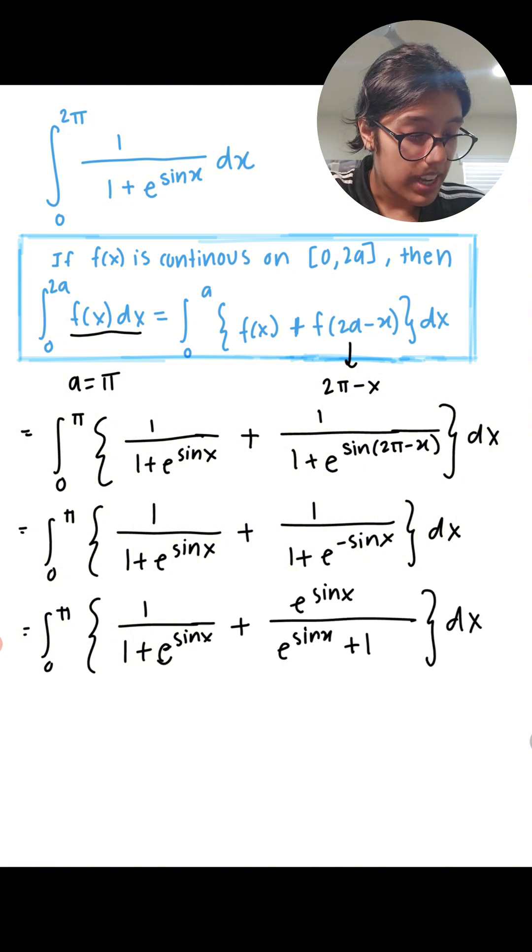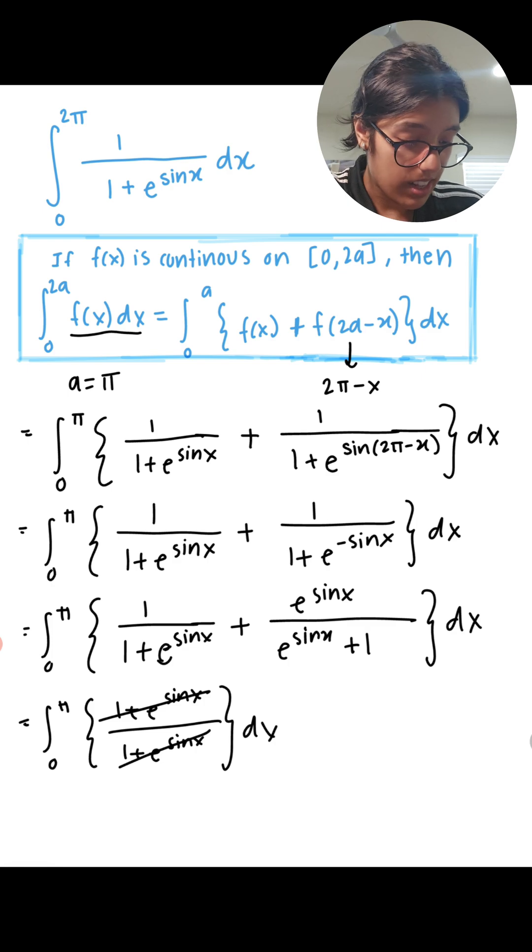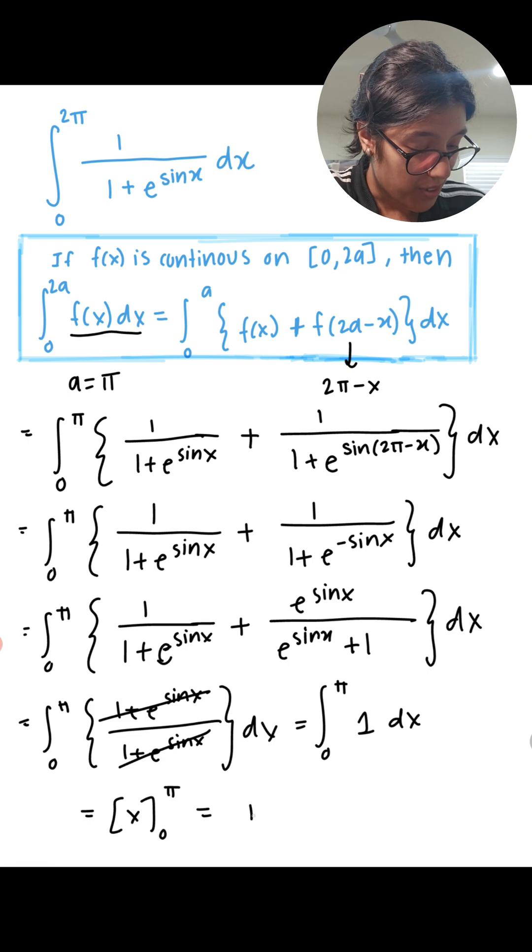So after I've simplified this now, I'm ready to add these. So we have 0 to π of 1 plus e to the power of sine x and then it has the same denominator. So 1 plus e to the power of sine x and you can see that this and this cancel out. So we're just left with 0 to π and then 1 dx and from here, this is a pretty easy integral to solve. So our final answer is just going to be π.